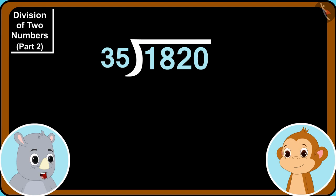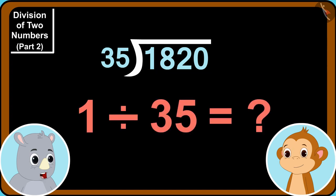Look Babban. Here, we are dividing 1820 by 35. First, we start with the number written in 1000 place. Can we divide 1 by 35? Gaggu asked Babban.